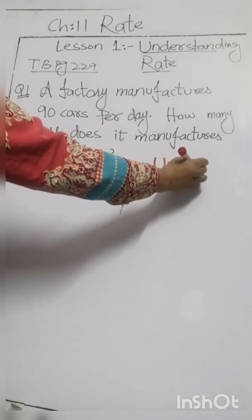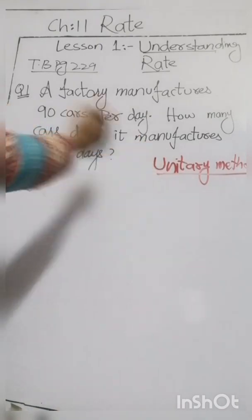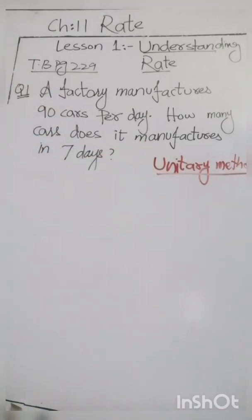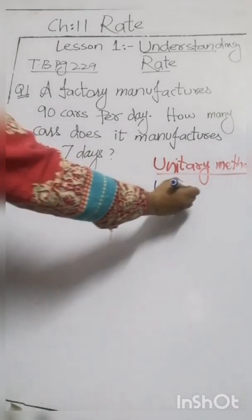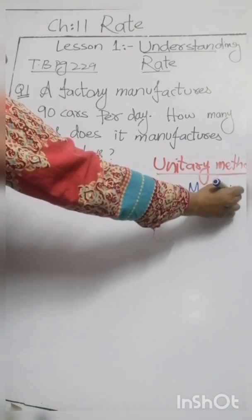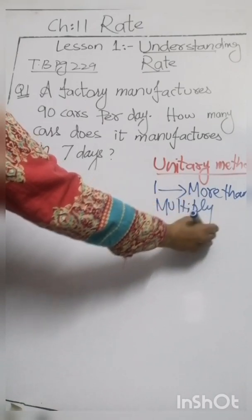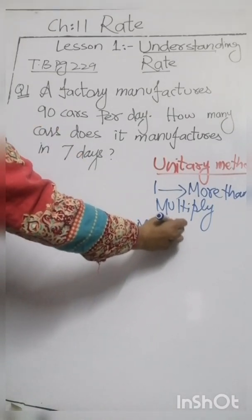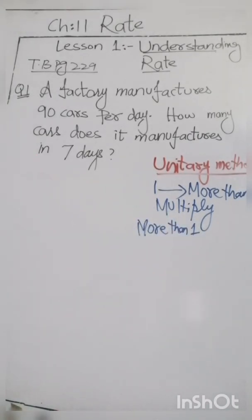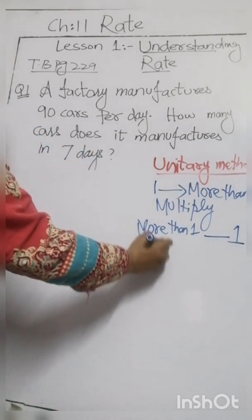Before explaining question number one, let me explain the unitary method. What is the unitary method? Unit means one. If the price of one thing is given and the question asks us about more than one, then we multiply. And if the price of more than one is given and they ask us about one thing, then we divide.